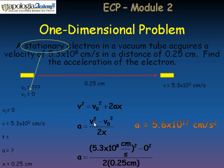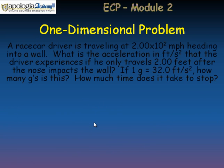Now let's take a look at another problem. Here we have a race car driver. He's traveling at 2.00 times 10 to the 2nd miles per hour heading into a wall. What is the acceleration in feet per second squared that the driver experiences if he only travels 2.00 feet after the nose impacts the wall? If one G is 32.0 feet per second squared, how many G's is this? And how much time does it take to stop?